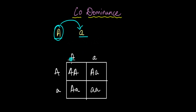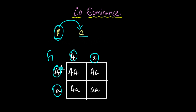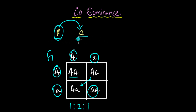If you take two heterozygous individuals, each having one dominant and one recessive allele, and cross them, the F1 generation would show one homozygous dominant, two heterozygous individuals, and one homozygous recessive in a 1:2:1 ratio. Now, if the traits were completely dominant — if A was completely dominant over small a — then only the dominant phenotype would be expressed even in heterozygous individuals.